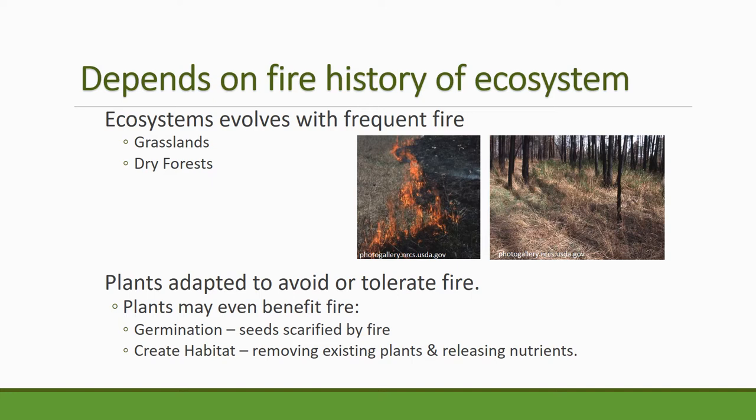Nearly all grasslands on earth evolved in systems that had frequent fire every decade or two. Dry forests such as ponderosa pine forest are another example, where trees often grow above the fire line and the biomass at the forest floor is pretty well adapted to fire. Those two ecosystems are really adapted to fairly frequent fire and they just have systems to recover from it.